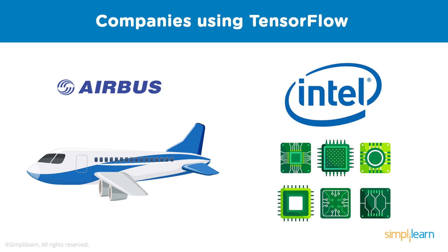Intel has partnered with Google to optimize TensorFlow inference performance across different models. This work has resulted in up to 2.8 times performance improvement, which benefits the TensorFlow community and a wide range of customers using TensorFlow on Intel platforms.